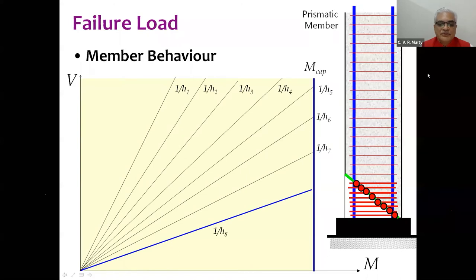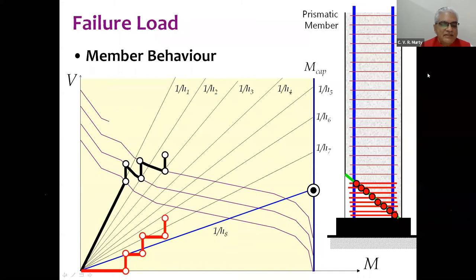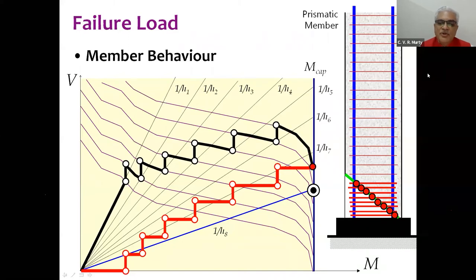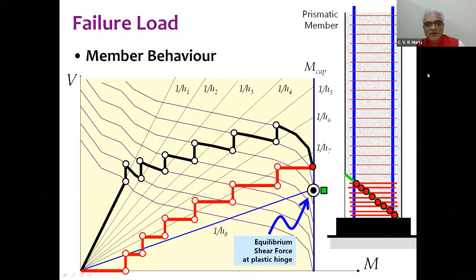In the case of eight stirrups crossing the crack, each stirrup crossed by the crack raises the strength a little, and finally the shear capacity of the member is much larger than the equilibrium shear force corresponding to the plastic hinge moment from yielding of the longitudinal bars — this is a flexure failure. We have now established the failure load, failure mode, and failure location.